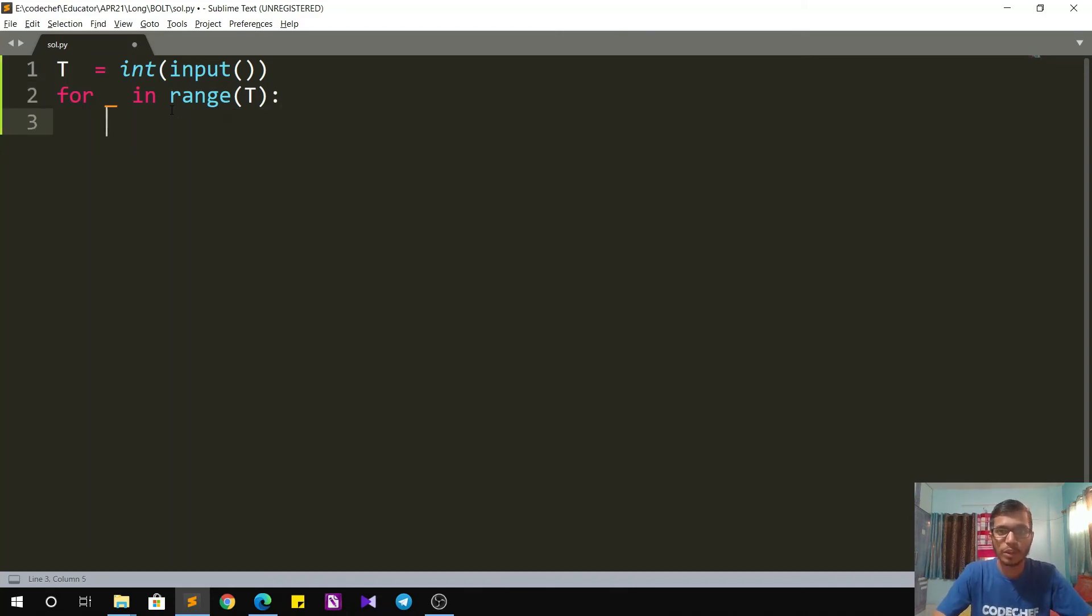I have to take the input for the four things: V, K1, K2, K3. So I'll just do that. The order was actually K1, K2, K3, and then V. So I'll just take the input and as they are floating point numbers, float X for X in input dot split. So that completes the input.